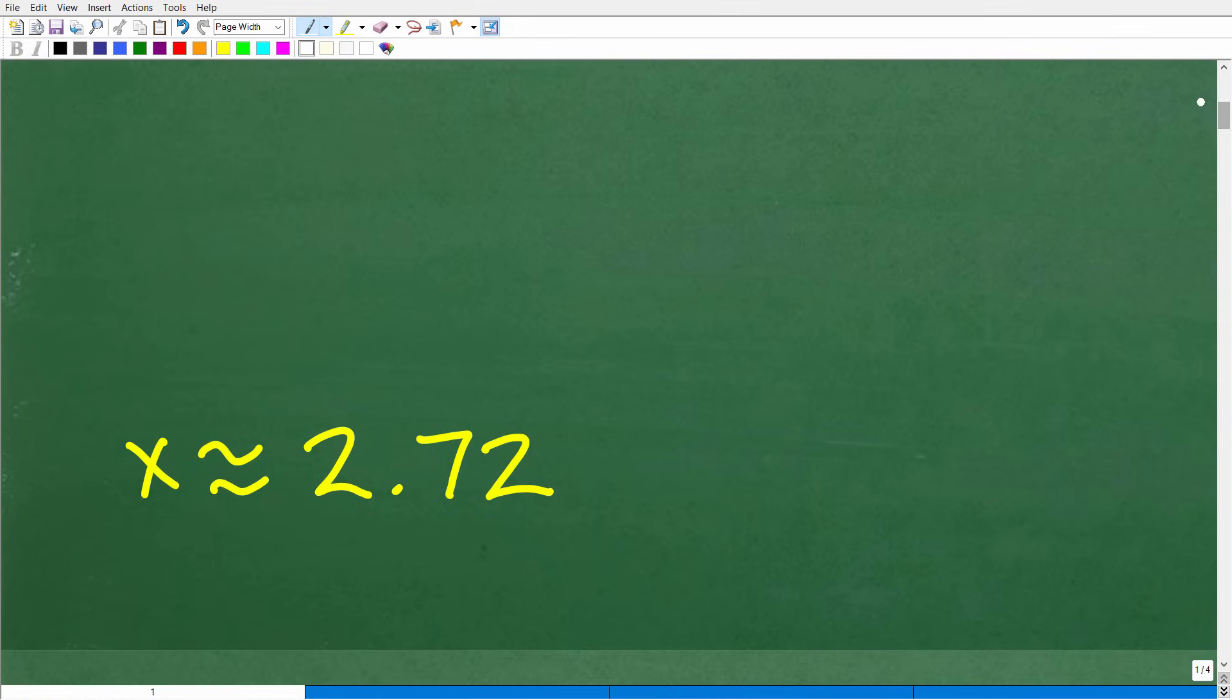The solution is x is approximately 2.72. Now there are other digits here, but I just kind of round it off. So if you got something close to 2.72, well, that indicates to me that you did this problem right, and that is fantastic.